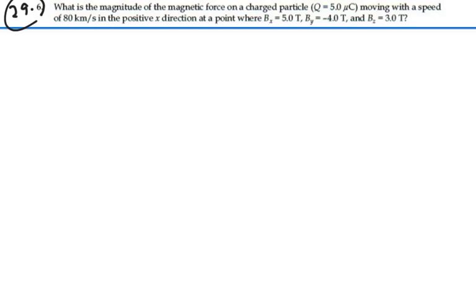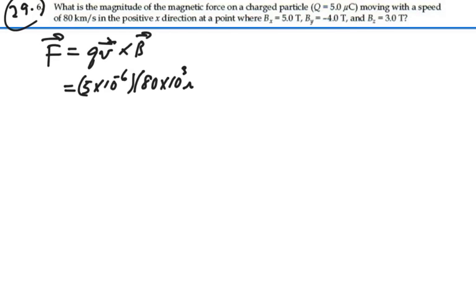We're not given the angle here, so we're going to have to go with the vector expression. So we'll have force is equal to QV cross B. And so what we have is our Q is 5 microcoulombs, 5 times 10 to the minus 6. Our velocity is 80 kilometers, so it's 80 times 10 to the 3 meters per second in the positive X direction, so that's I crossed with our magnetic field, which is 5I minus 4J plus 3K Tesla.